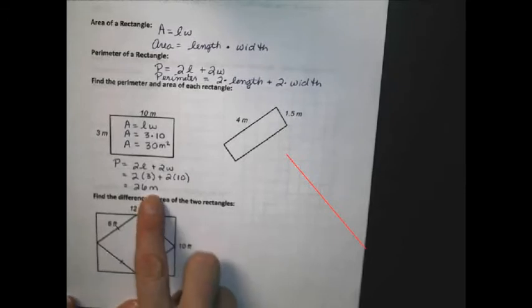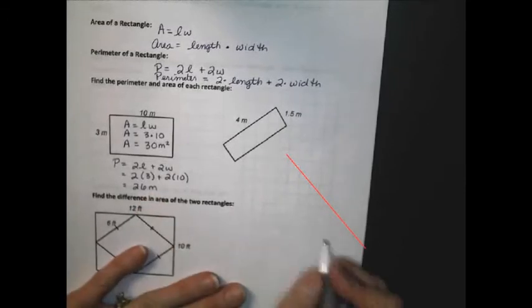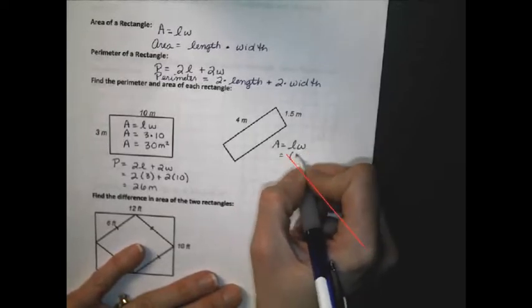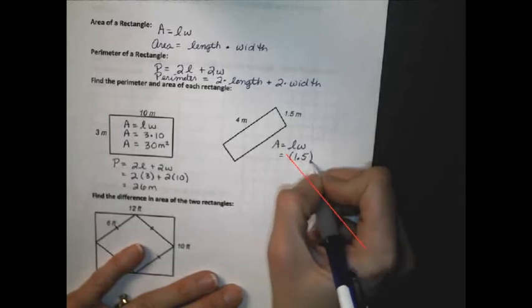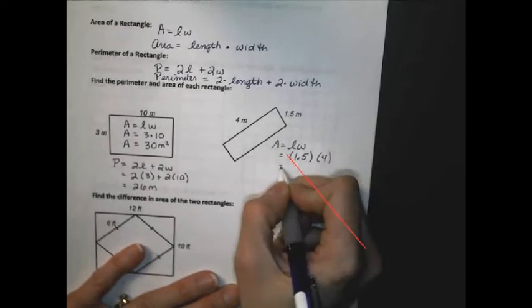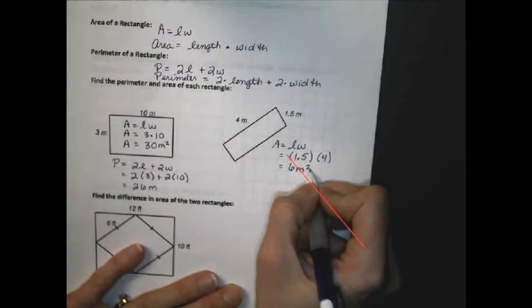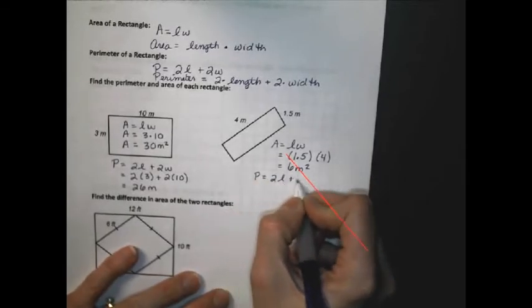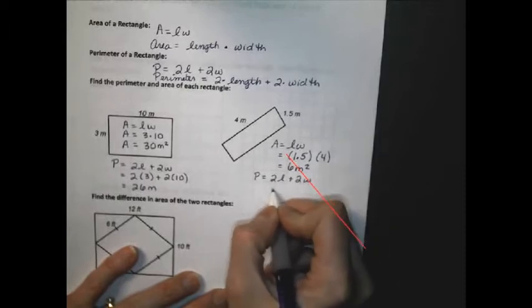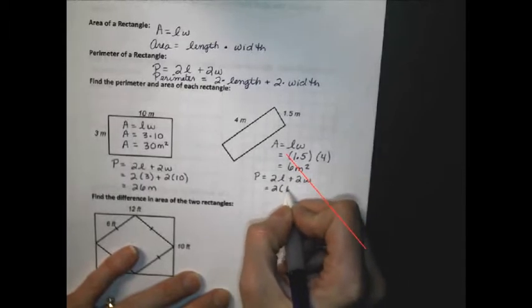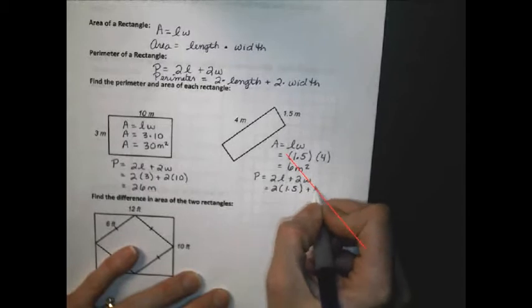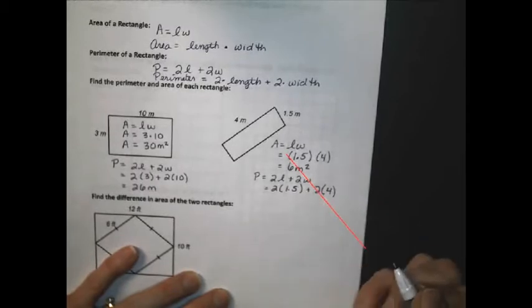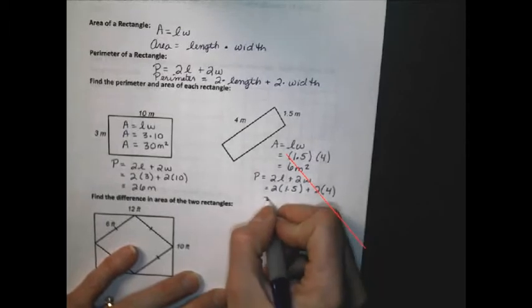In the second example, I'm going to find area as length times width, and that would be 1.5 times 4, or 6 meters squared. The perimeter is 2 times the length plus 2 times the width, which gives me 2 times 1.5 plus 2 times 4. When I simplify, I'm going to get 3 plus 8, which equals 11 meters.